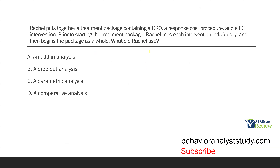Let's think about Rachel's behavior. She put together a treatment package — that's important. The DRO, response cost, and FCT are all part of one package. However, before she started the package, she tried each intervention individually, meaning we're looking at some sort of component analysis. With a component analysis, we have a treatment package. Don't confuse it with a comparative analysis, where you're comparing different things that aren't part of the same package.